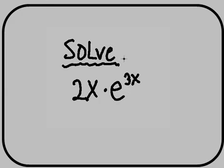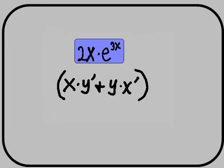Solve 2x times e to the 3x power. We'll use the x times y prime plus y times x prime method for doing this.